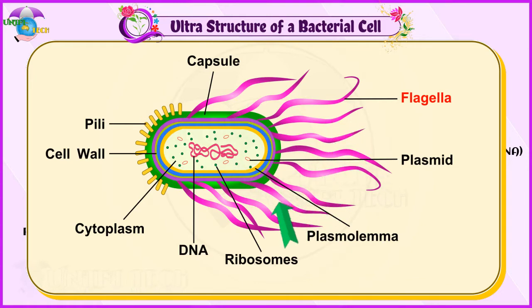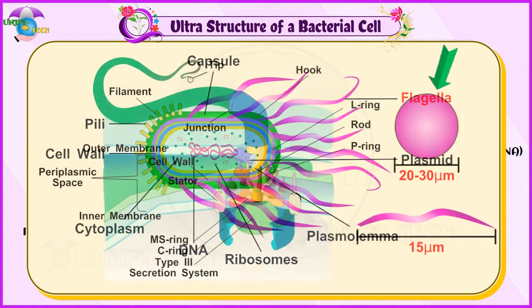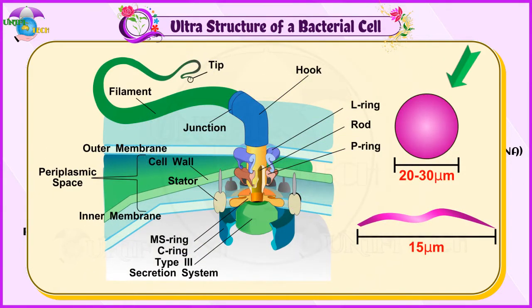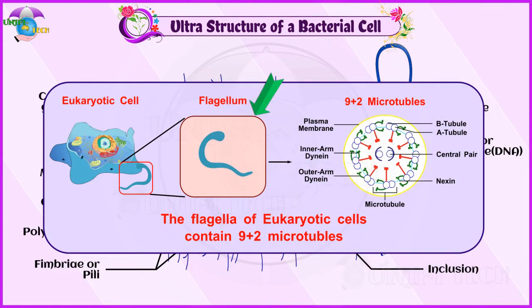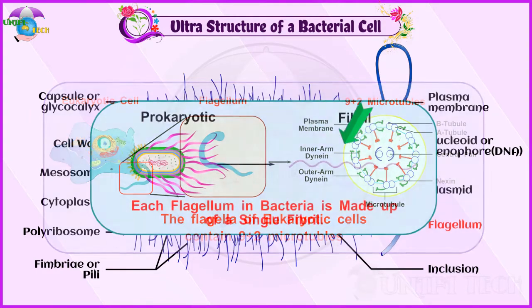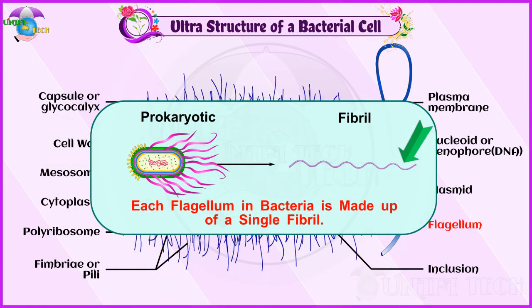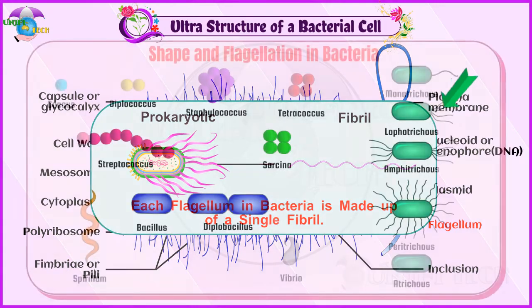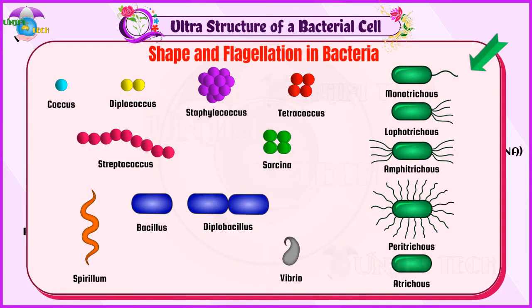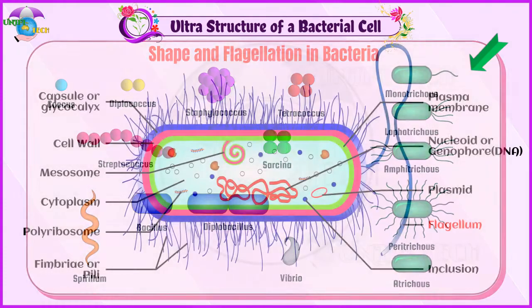Flagella: Certain motile bacteria have numerous thin hair-like processes of variable length emerging from the cell wall called flagella. They are 20 to 30 nanometers in diameter and 15 to 20 micrometers in length. The flagella of eukaryotic cells contain 9+2 microtubules, but each flagellum in bacteria is made up of a single fibril. Flagella are used for locomotion. Based on the number and position of flagella, there are different types of bacteria.